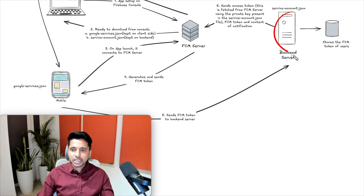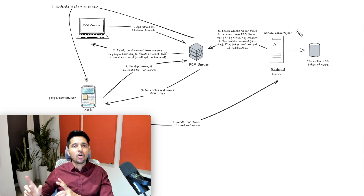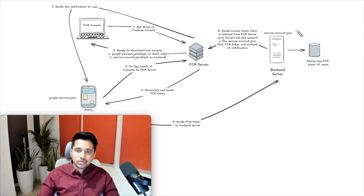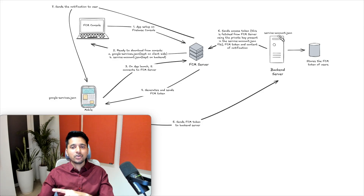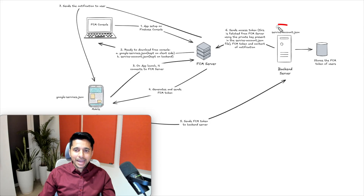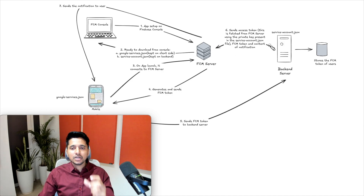Now that we have FCM tokens stored on our backend, the next step is sending the notification. For example, suppose someone commented on your post. The backend server will detect this event and know it needs to notify you. It will prepare a notification like 'XYZ commented on your post,' then connect to the FCM server, which will ultimately send the notification to the client.